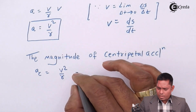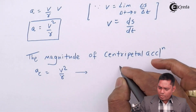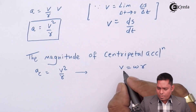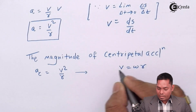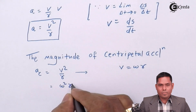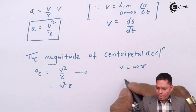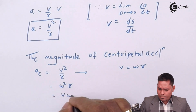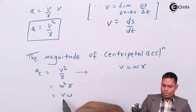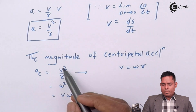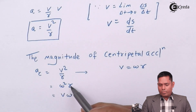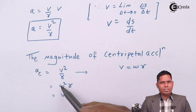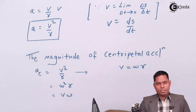This can also be written in different forms. Since V = ω·R, substituting gives A = ω²R. If we put R = V/ω, we get A = Vω. So we have three equivalent formulas: V²/R (when only linear velocity is known), ω²R (when only angular velocity is known), and Vω (when both are given).